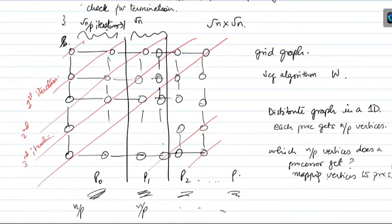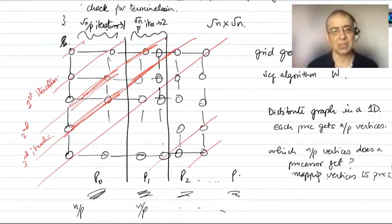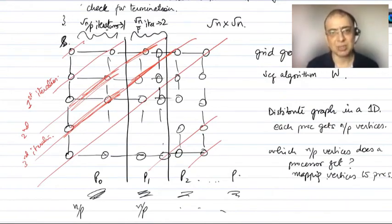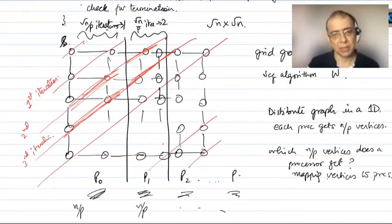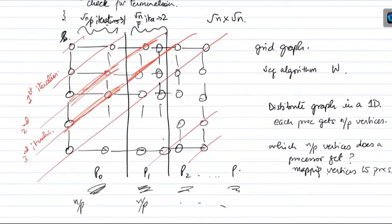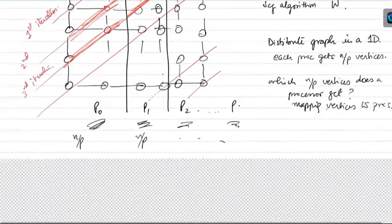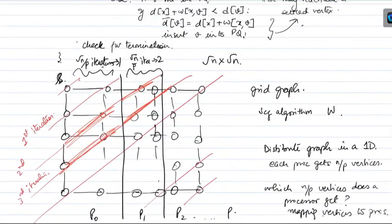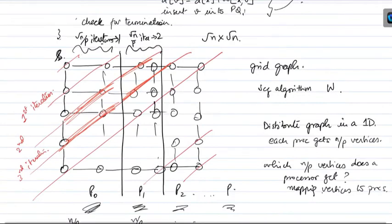Then for the next root-N/P iterations, two processors are going to be busy. Similarly, for the next, three processors will be busy, and so on. For each root-N/P iterations: one processor is busy, then two processors are busy, and so on, all the way up to P. At some point all P processors will be busy, and then it's going to come back to P minus 1, P minus 2, all the way back to 1. So on average, P/2 processors are busy.